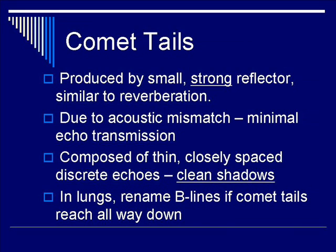Next, we're going to talk about comet tails, which describe the second category of small strong reflectors, in a similar process to reverberation. Because of the acoustic mismatch between the incident beam and structures of different acoustic impedance, there is minimal echo transmission beyond the object of interest. This results in thin, closely spaced discrete echoes forming clean shadows. In the lungs, if you get these comet tails and the signals go all the way down to the far field of the B-mode image, they're called B-lines.